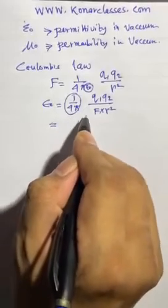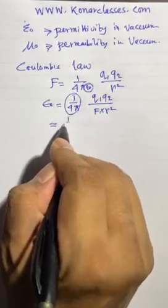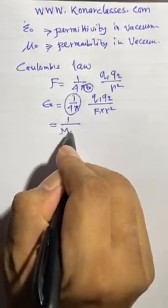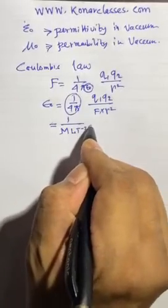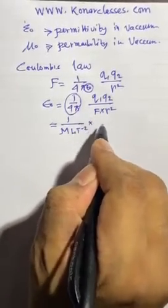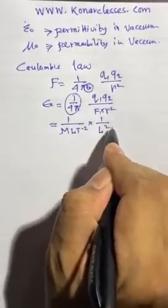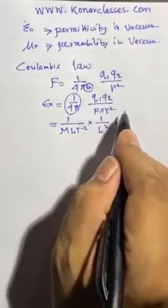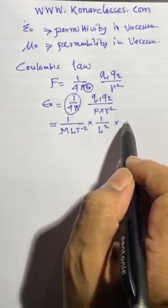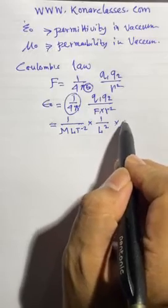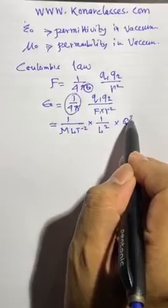So it is coming 1 by F — F is the force, so 1 by mass times L times t to the power minus 2, that is mass into acceleration. Into r square means L square. And q is the charge, so it is coming q square.